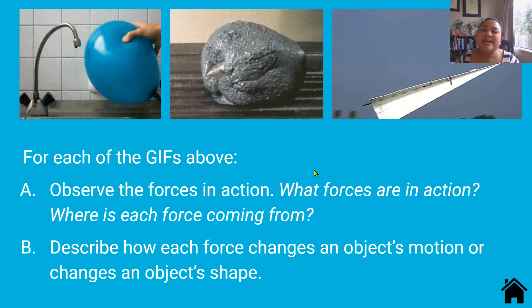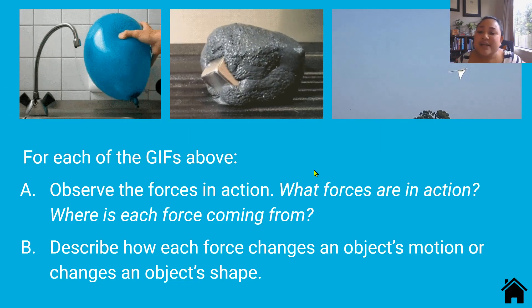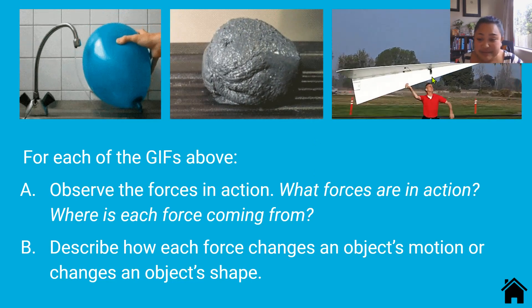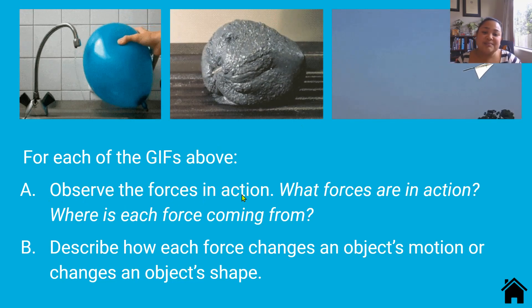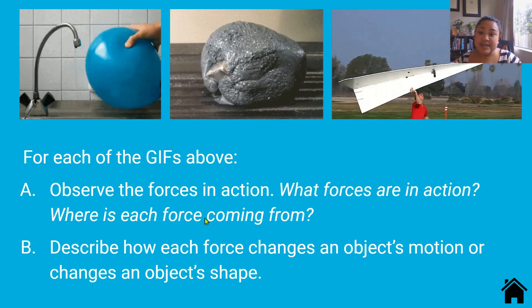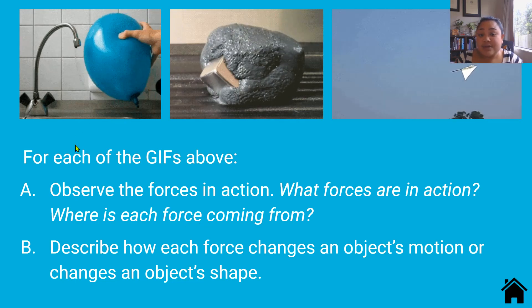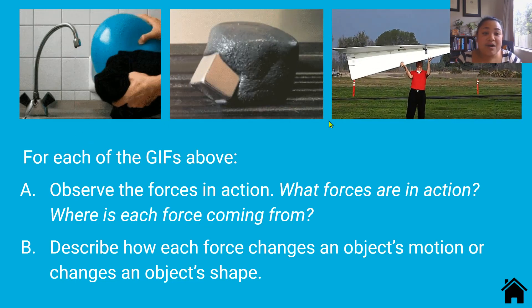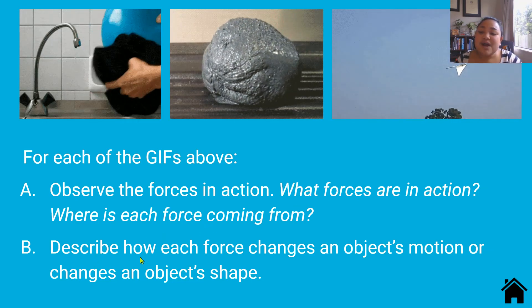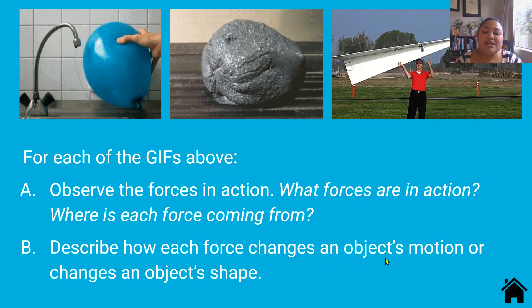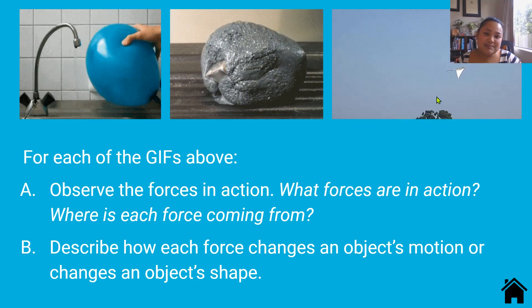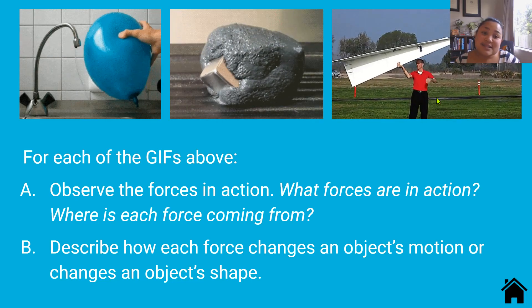Okay, so here is an important activity that you have to do. So for each of the GIFs above, there's three GIFs. There's a balloon GIF, there's a magnet GIF, and there's an airplane GIF. Observe the forces in action. So what forces are happening here? What's in action here? Where is each force coming from? Is it coming from the balloon? Is it coming from the ground, the earth? Is it coming from this magnet? Is it coming from this man here? Where is the force coming from? And describe how each force changes an object's motion or changes an object's shape. So how do the forces change motion or shape in these examples? Pause this video and write your answers in your book, please.